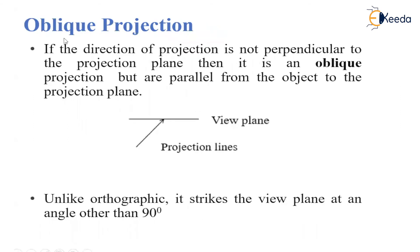The next type of parallel projection is the oblique projection. If the projection direction is not perpendicular to the projection plane, then it is an oblique projection. But the lines are parallel from the object to the projection plane. This is the view plane on which we take the projection of the 3D object, and the projection line makes an angle other than 90 degrees.